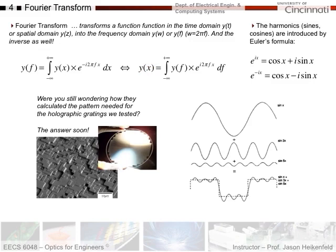If you want to take a function as a function of distance or space, you put the function into the integral with respect to x, and you include the term e^(-i2πfx), which makes it a Fourier transform. The frequencies come in through this exponential imaginary term, because by Euler's formula these are equivalent to sines and cosines. You can also do the inverse — derive the function in the frequency domain, put it in, reverse things, and obtain it back in the spatial domain.